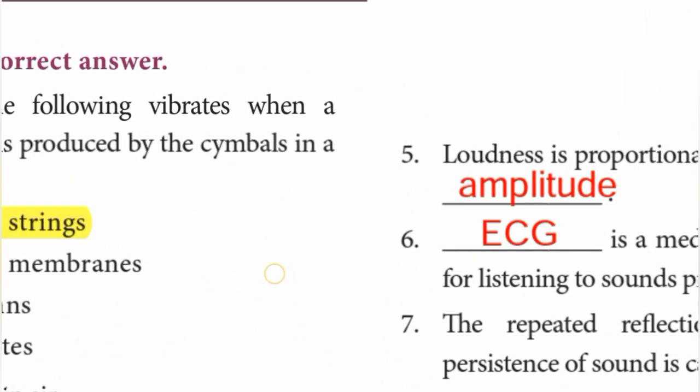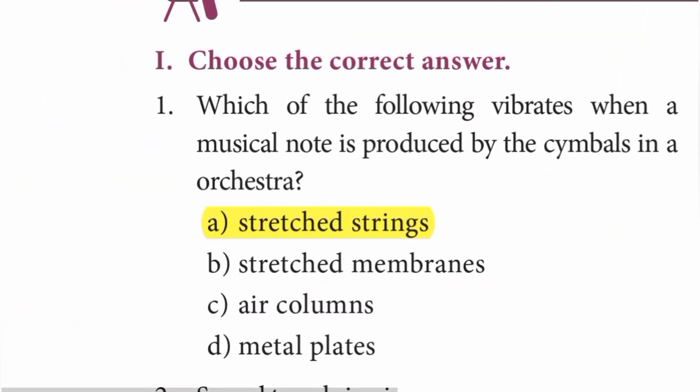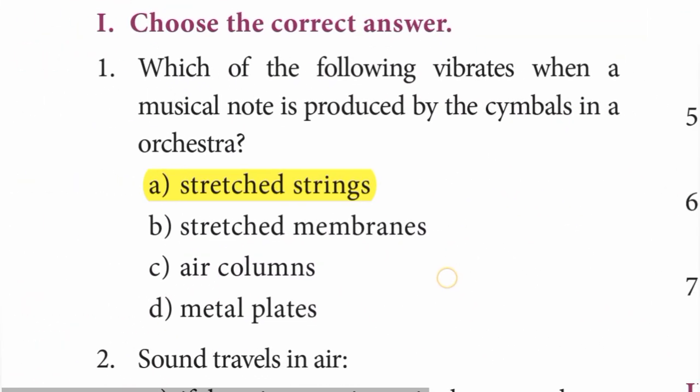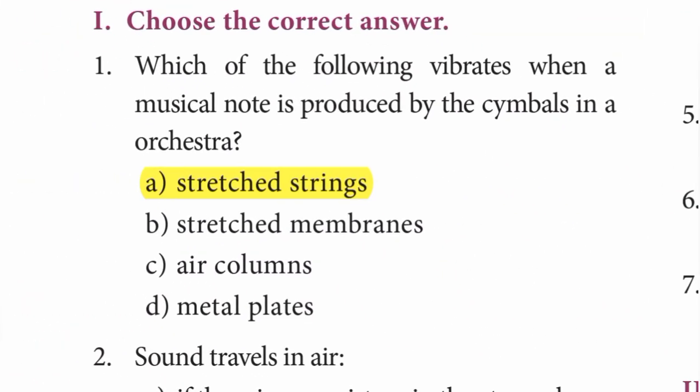Roman numeral I — Choose the correct answer. Question 1: Which of the following vibrates when a musical note is produced by the symbols in an orchestra? Answer: option A — stretched strings.